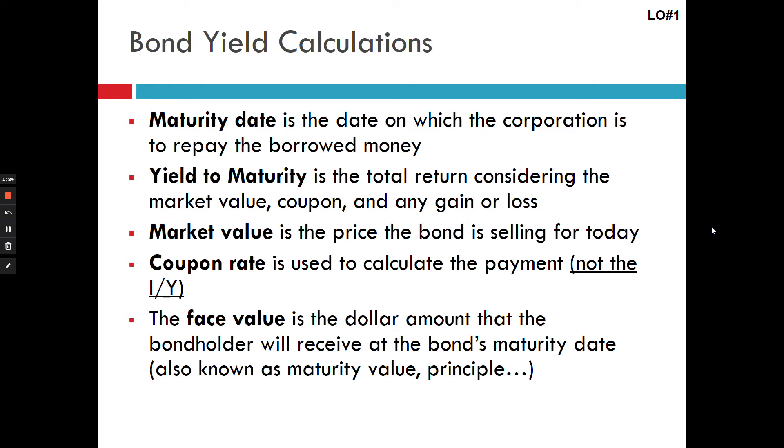Yield to maturity is how much you're actually earning on the bond and this is your IY. Your market value is how much you're paying for it right now, today. So that would seem obvious that that's your price. Sorry, that is your present value.